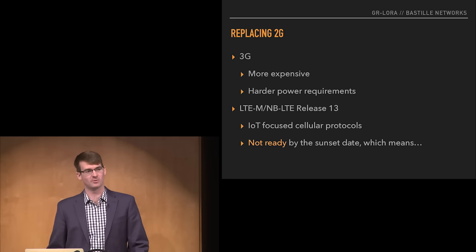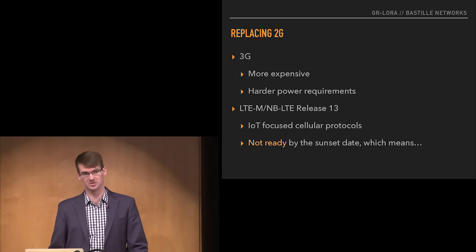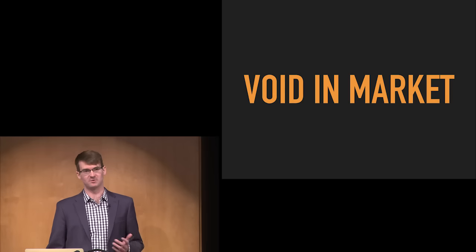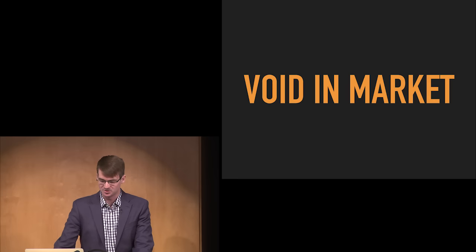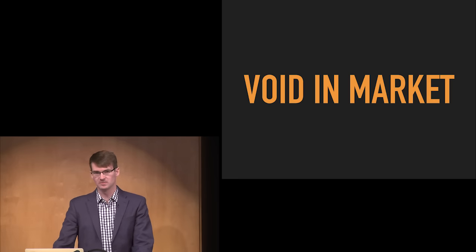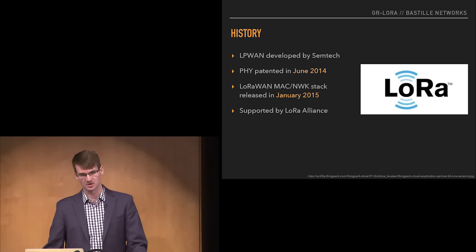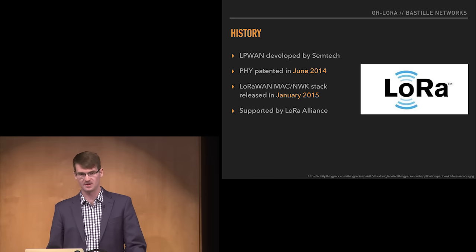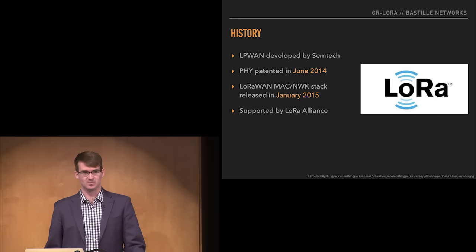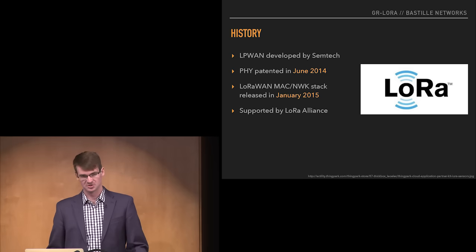That's the LTE-M Release 13 standard — the standard's already out, but all indications from people in the industry are that this is not going to be ready by the sunset date. More likely it's going to be deployed sometime in 2018. So there's a void in the market if you are trying to develop a broadly deployable IoT connected solution. A number of companies have popped up to address this gap, and one of the most promising emerging technologies is called LoRa. LoRa is an LPWAN developed by Semtech, a semiconductor company. It launched in June 2014 — just two years ago — and the layer two standard was only released in January of last year. There's a robust developer consortium called LoRa Alliance that tripled in size in the last year. So it's growing like you wouldn't believe, but still very, very new.